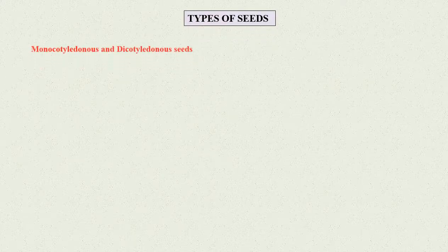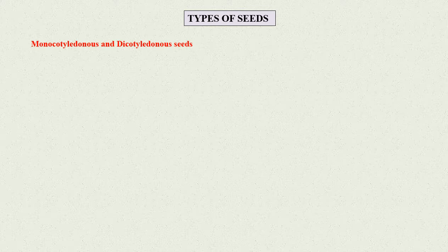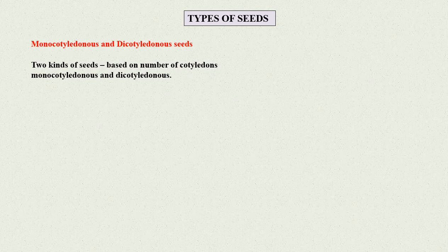Types of seeds: Monocotyledonous and dicotyledonous seeds. Depending upon the number of cotyledons, there are two kinds of seeds: monocotyledonous and dicotyledonous.